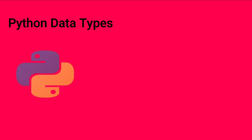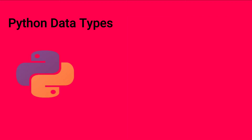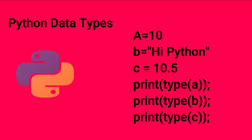The next topic is Data Types. Python has a unique approach to data types. If we want to check a type, we use the type() function. For example, A equals 10, B equals 'hi.python', C equals 10.5. Then print type of A — that uses the type function. B equals string, so that will print the type.